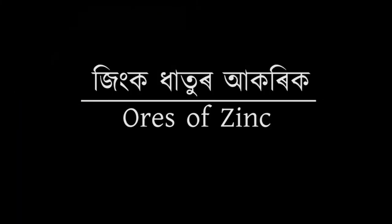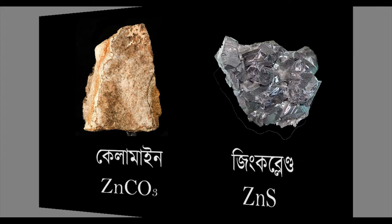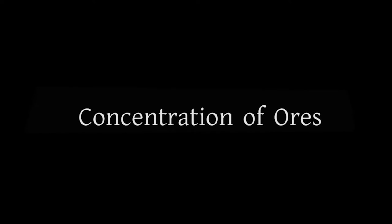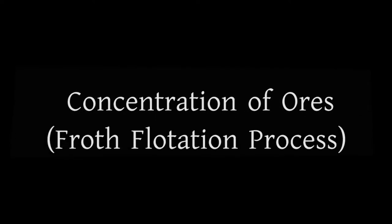The ores of zinc are found in two forms: calamine or zinc carbonate, and zinc blend or zinc sulfide. In case of extraction of ores of medium reactive metals, the ores are concentrated first. Zinc ores are concentrated by froth flotation process.